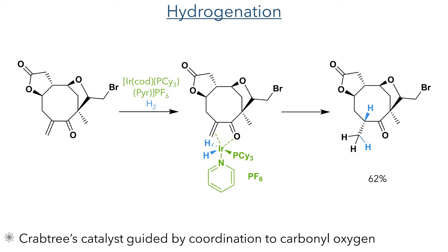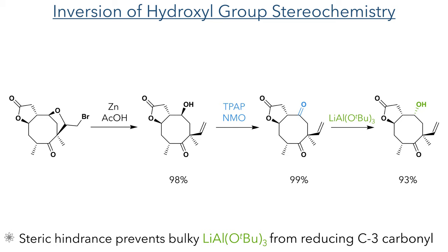With this hydrogenation now complete, they could then restore the vinyl group, which was liberated by reacting the molecule with zinc dust and acetic acid. However, this molecule had the hydroxyl group in the wrong stereochemistry. To invert this stereochemistry, it was first oxidized to a ketone using a Ley oxidation. This was then reduced using a bulky lithium-aluminium hydride reagent. The steric bulk of this reagent prevents the hydride from being added to the top face of the molecule, and produces a hydroxyl group with syn stereochemistry to the adjacent carbon-carbon bond of the fused lactone.